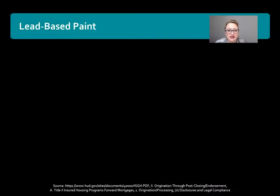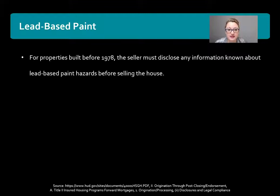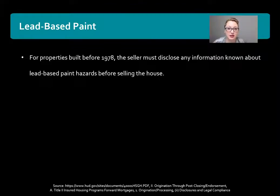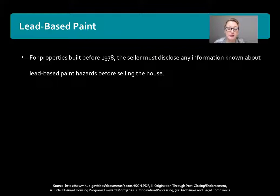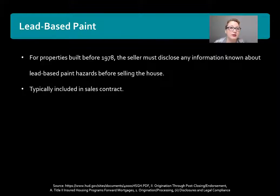Next is lead-based paint. This is not a specific disclosure that HUD has created, but it applies to properties built before 1978. If the buyer is buying a property built before 1978, the seller is required to disclose any information known about lead-based paint hazards before selling the house. Typically, this information is going to be included in the sales contract.